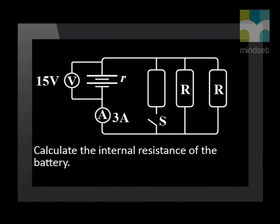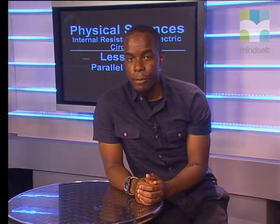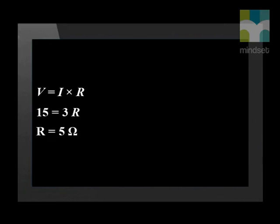Calculate the internal resistance of the battery. First we use the measured potential difference 15 volts to calculate the external resistance in the circuit. We substitute our values into the formula for Ohm's law. Potential difference V equals current I times resistance R. We find the resistance for the external circuit equals 5 ohm.